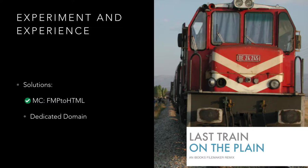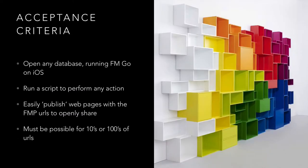Our solution is to build a module we're calling fmpdhtml, which I'm going to demo right now, and then build out a dedicated domain — a website that all these pages can live on. Our criteria for this module is that you should be able to open any database running on FM Go on iOS, on our iPads. We've actually moved beyond that so you can also open up any database running on your Mac. You should be able to run a script to perform any action within that database, easily publish these web pages so they can be openly shared, and be able to do this for tens or even hundreds of URLs really easily.